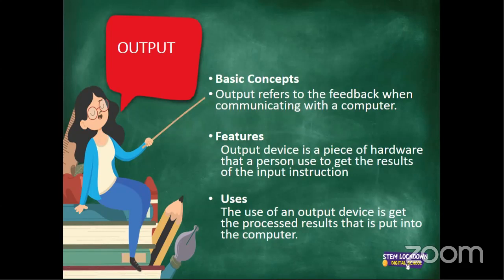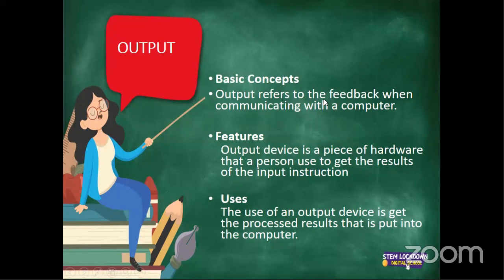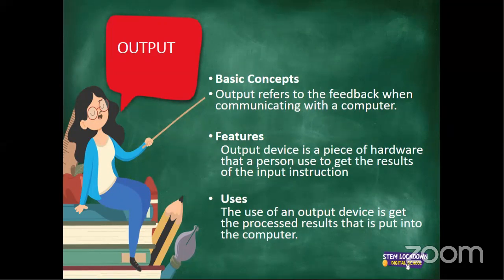We must be very careful about this — we should be able to make a distinction between output and input; remember these are processes. But if you are saying output device, you are talking about an actual hardware device that can accomplish this action of outputting. Output refers to the feedback when communicating with the computer. Output device is a piece of hardware that a person uses to get the results of input instructions. All these hardware are manufactured in such a way each can fulfill a specific operation or task of a computer.